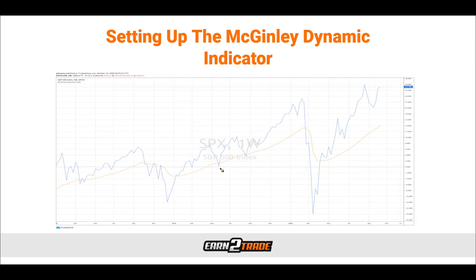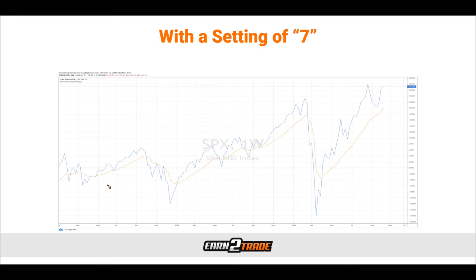This is what it looks like on a one-week SPX chart — the S&P 500 index — showing a 14-period version. Pay close attention to this yellow line as we switch it from a 14-period to a 7-period. With the 7-period, just like a moving average would, it now follows price much more closely, meaning the indicator is more sensitive and replicates shifts in the market's direction quicker. There is no right or wrong setting — it's up to you to decide which setting best suits your trading style and the current market condition.